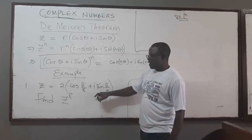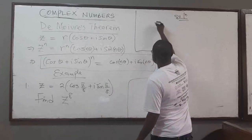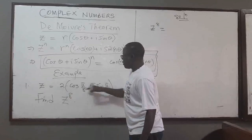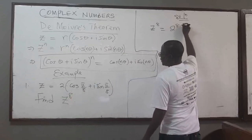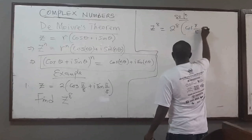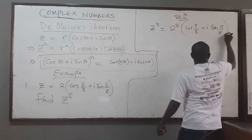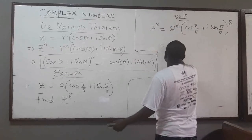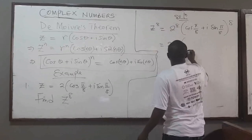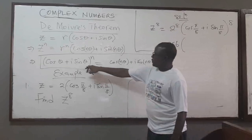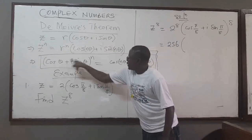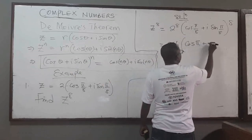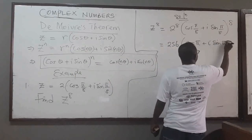We already have the complex number in polar form, so this makes it easy. z to the power 8 is just equal to 2 to the power 8, times (cos(π/8) + i·sin(π/8)) raised to the power 8. So 2 to the 8 is 256, and I just multiply the argument by the power, giving cos(8 × π/8) = cos(π) plus i·sin(π).